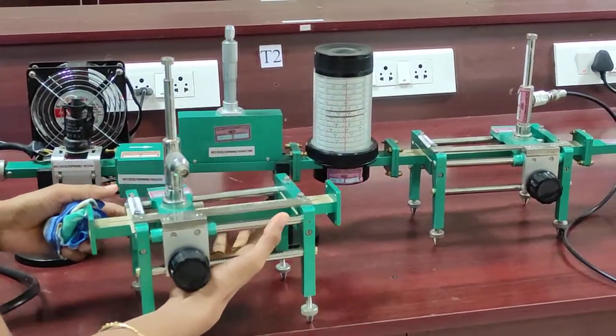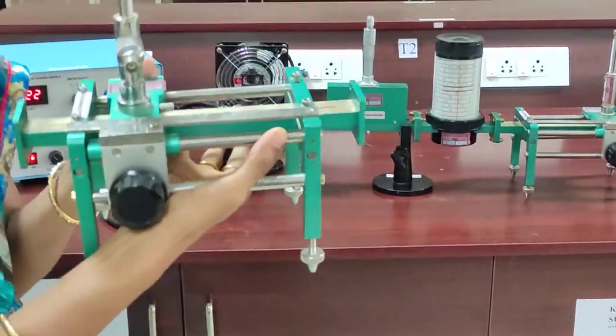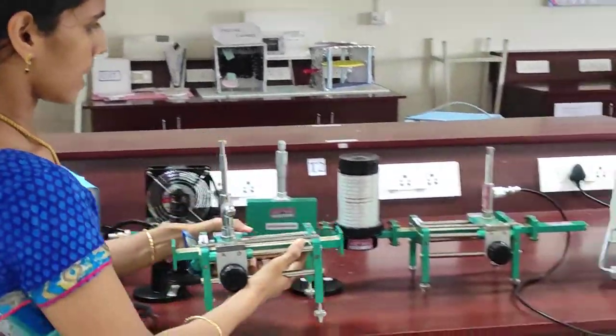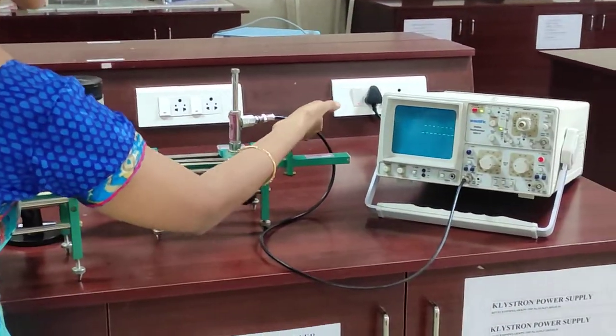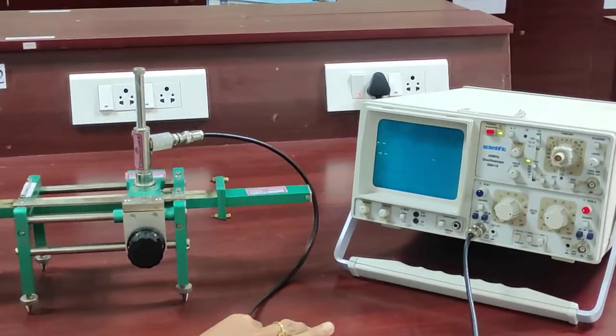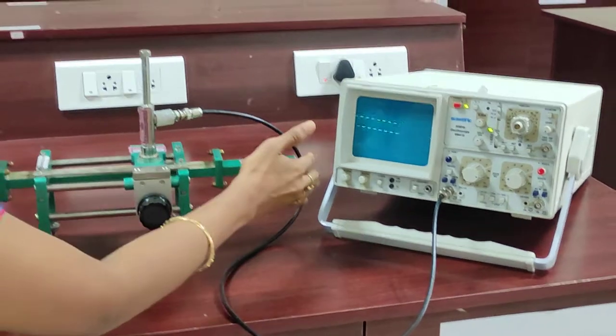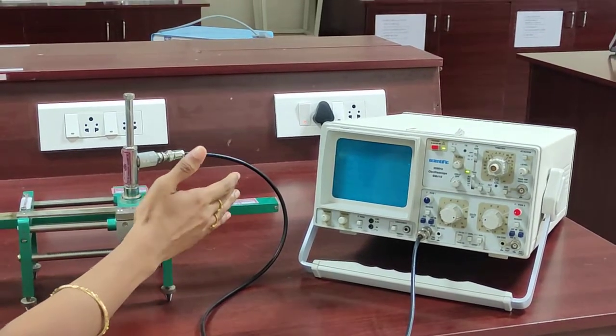So here we are going to introduce one new section called slotted line section. This is slotted line section. Here, I can connect my CRO probe in order to get the output. I can connect the CRO probe here and at last I am connecting a matched termination.